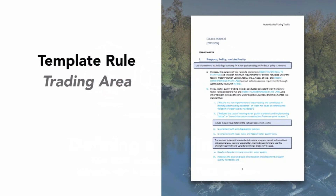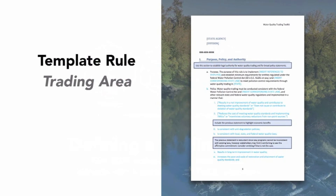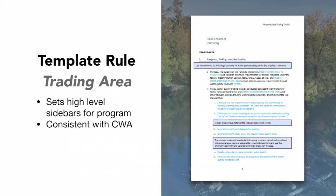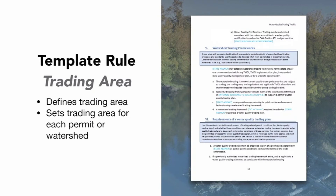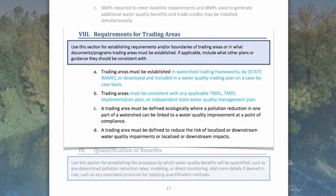The template rule provides a definition of trading area. Remember that the state rule is designed to set the high-level sideboards for the program, such that water quality trading is consistent with the Clean Water Act, and provide clarity on those areas where there is unlikely to be variability between watersheds or permits. The template rule provides a definition of a trading area, sets the expectation that each permit define a trading area, and describes some requirements the trading areas need to meet.